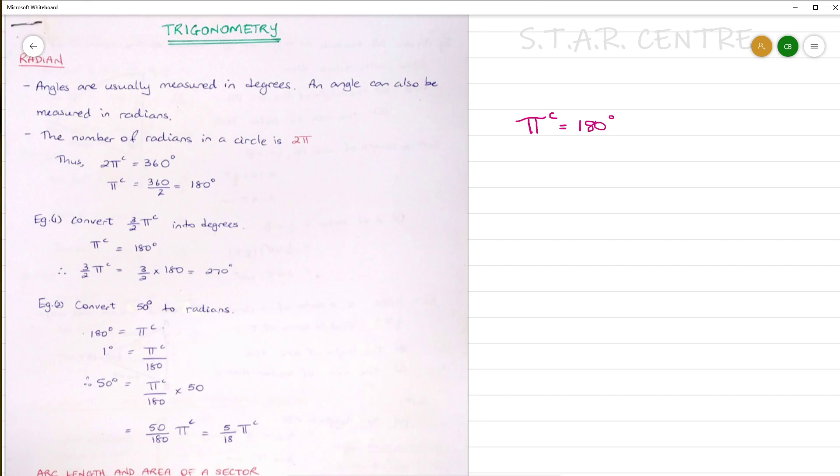We are going to look at two examples. The first example involves converting from radians to degrees. From before, π radians equal 180 degrees. We would like to convert 3 over 2 π radians into degrees. Just to note that 3 over 2 π radians is the same as 3π all over 2. So π radians equal 180 degrees. Therefore, 3 over 2 π radians would be 3 over 2 multiplied by 180, which is equal to 270 degrees.